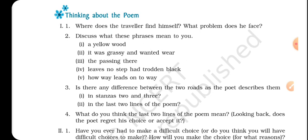The fifth phrase is 'how way leads on to way.' After one way, another way, another way — next road, next road, next road. This is very simple; this is the crux of the poem, the center of the poem. It describes the way the roads and paths work. This is very simple and you can explain it easily.